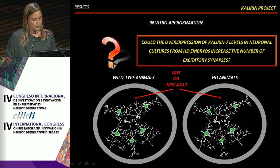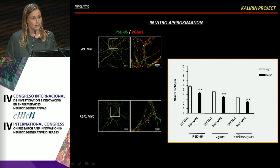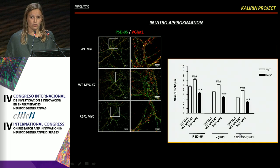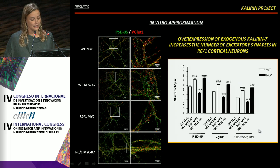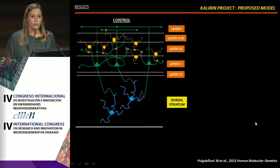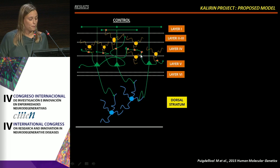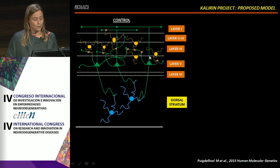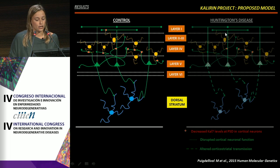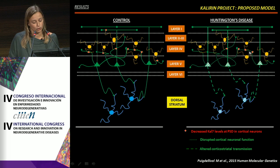We then asked whether overexpression of Calneuron-7 in neuronal cultures from HD embryos could increase the number of excitatory synapses. We transfected cultures overexpressing Calneuron-7 and found that in the wild-type condition, overexpression promotes a significant increase in excitatory synapses. More importantly, overexpression of Calneuron-7 also increases excitatory synapses in the presence of mutant Huntingtin. We propose that proper Calneuron-7 expression promotes proper cortical communication and corticostriatal connectivity, while in HD, decreased Calneuron-7 levels contribute to altered cortical circuitry and disruption of corticostriatal connectivity.